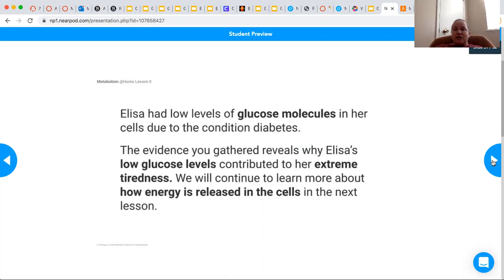So Elisa had low levels of glucose molecules in her cells due to the condition of diabetes, and the evidence that we just gathered reveals why Elisa's low glucose levels contributed to her extreme fatigue. Because she didn't have the glucose, then she wasn't able to release as much energy in her cells.